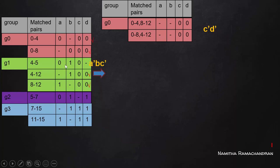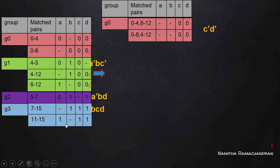The unticked entries give the following expressions: A'BC' (A and D absent), A'BD (A and C absent), BCD (A absent), and ACD (B absent). The entries in the earlier table all have tick marks, so we do not need to consider that table further.